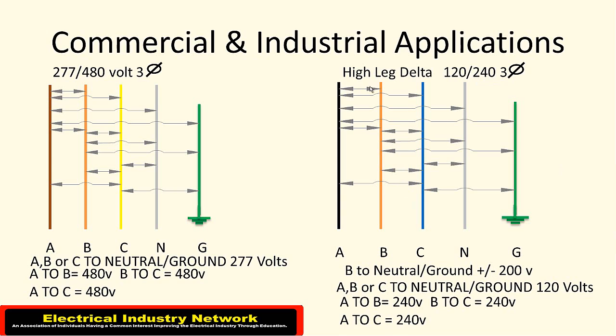So between the A to B phase, which is any C regulated as, you should tape it as orange, being the high leg. Between the A to B, you're going to get your 240. Between A to C, you'll get your 240. And then from the B leg to neutral or to ground is where you're going to get this down here, your plus or minus 200. And like I said, I've run into a lot of it, it's a lot of 190.